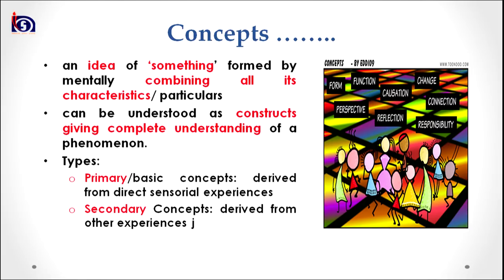A concept is a category or a construct which defines something holistically by identifying and explaining all its characteristics. It can be understood as a construct giving complete understanding of a phenomenon. There are two types of concept. The first is primary concept, which we acquire from direct sensorial experiences. The second type is secondary concepts, which are derived from experiences beyond direct sensorial experiences.